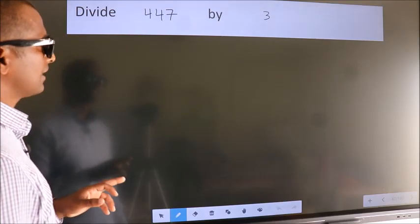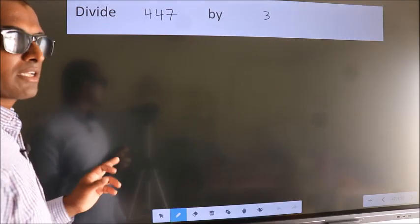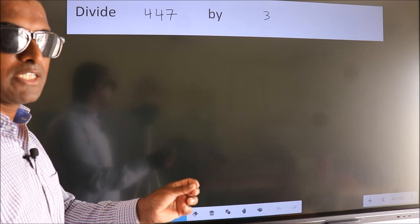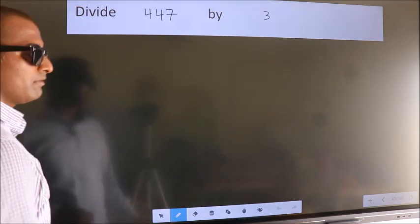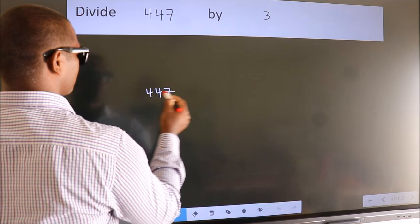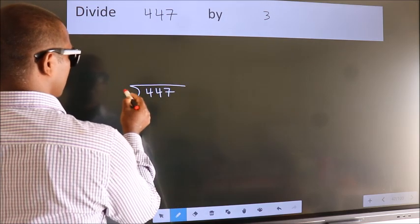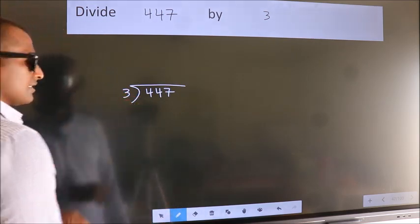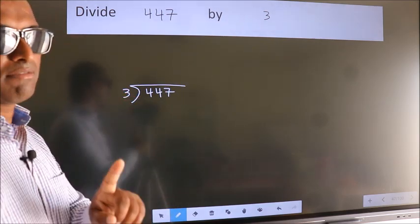Divide 447 by 3. To do this division, we should frame it in this way. 447 here, 3 here. This is your step 1.